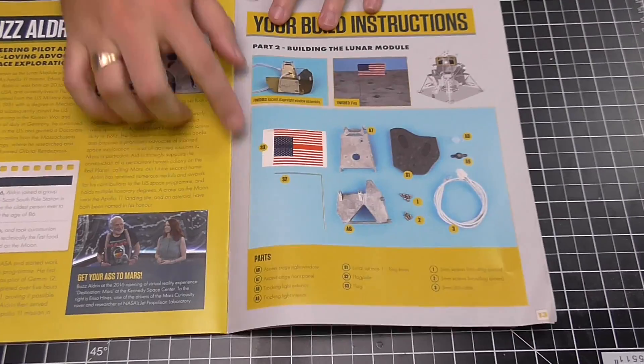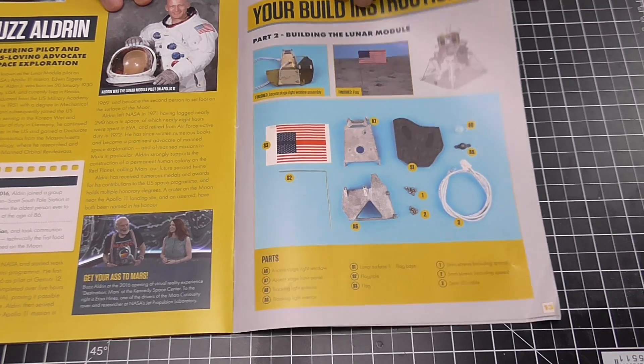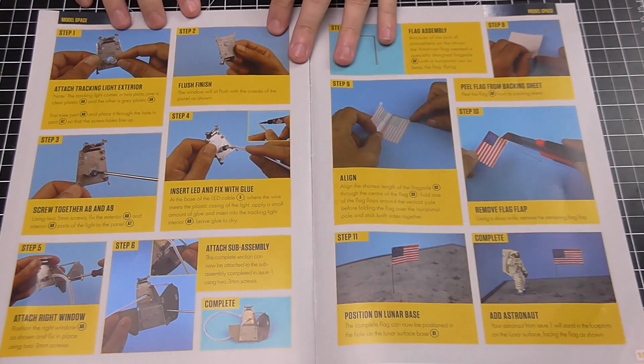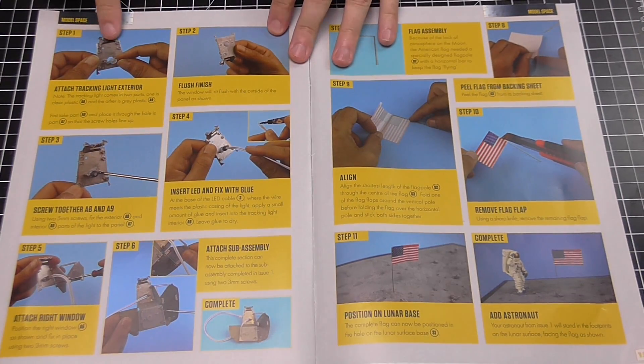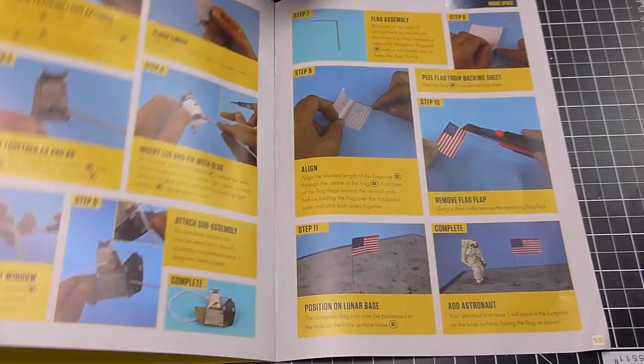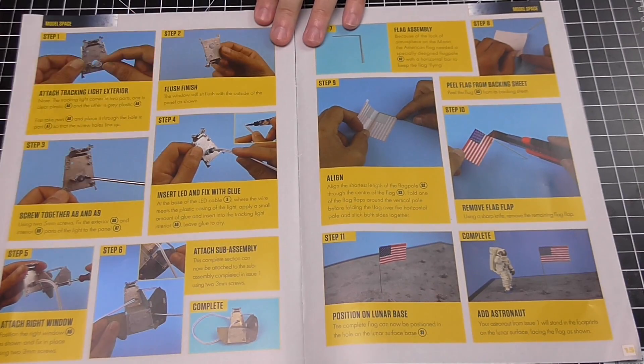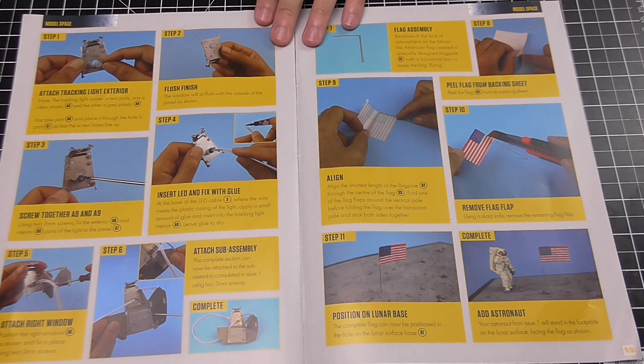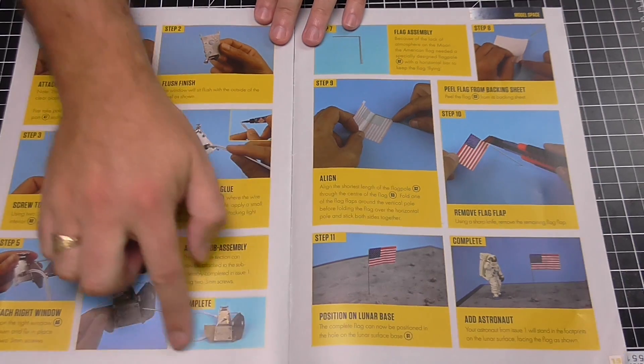So let's show you what we've got to do. Quite simple, these are all the parts here. And then we're going to be doing this tracking light exterior, which is part of this ascent stage right window assembly. That's what they're calling it. And this is going to be attached to the part that we worked on the last issue, and that's going to be complete there.